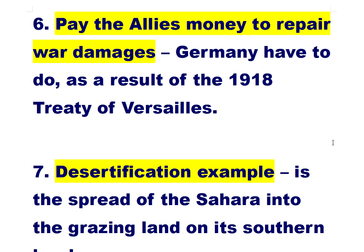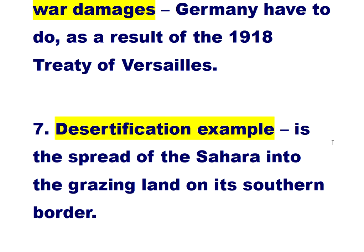Number six: paying the Allies money to repair war damages was what Germany had to do as a result of the 1918 Treaty of Versailles. Number seven: desertification — an example is the spread of the Sahara into the grazing land on its southern border.